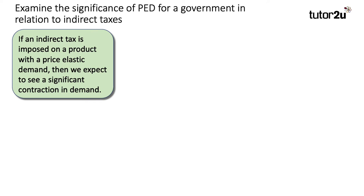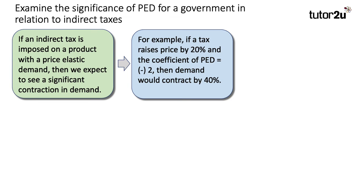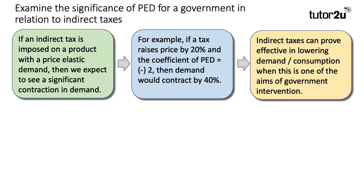However, if an indirect tax is imposed on a product with a price elastic demand, then the main effect is probably going to be on the quantity consumed — you could see a significant contraction in demand. For example, if a tax raises price by 20% and the coefficient of elasticity is 2 — anything more than 1 is price elastic — then demand would contract by 40% on the back of that price increase. So when demand is price elastic, taxes can have quite a hefty effect on consumption. Indirect taxes can prove effective in lowering demand, especially if that is one of the aims of government intervention — target products where demand is price sensitive.